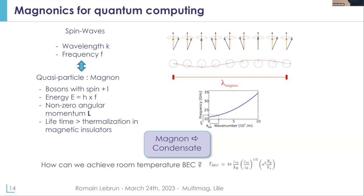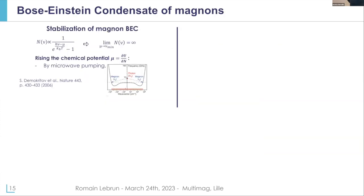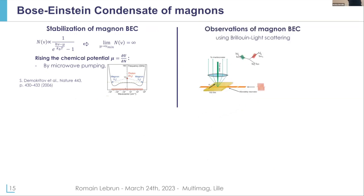This means that if you can increase the magnon population up to a threshold level, potentially those magnons can condense into a magnon Bose-Einstein condensate. This can be achieved at room temperature because of the small mass of the magnon. Going back to standard Bose-Einstein statistics, the key idea to reach Bose-Einstein condensate is to increase the chemical potential to the minimum in energy of your dispersion curve. What people did about 15 years ago was to excite magnons through microwave pumping to increase the magnon population and at the threshold level they were able to observe magnon condensation.